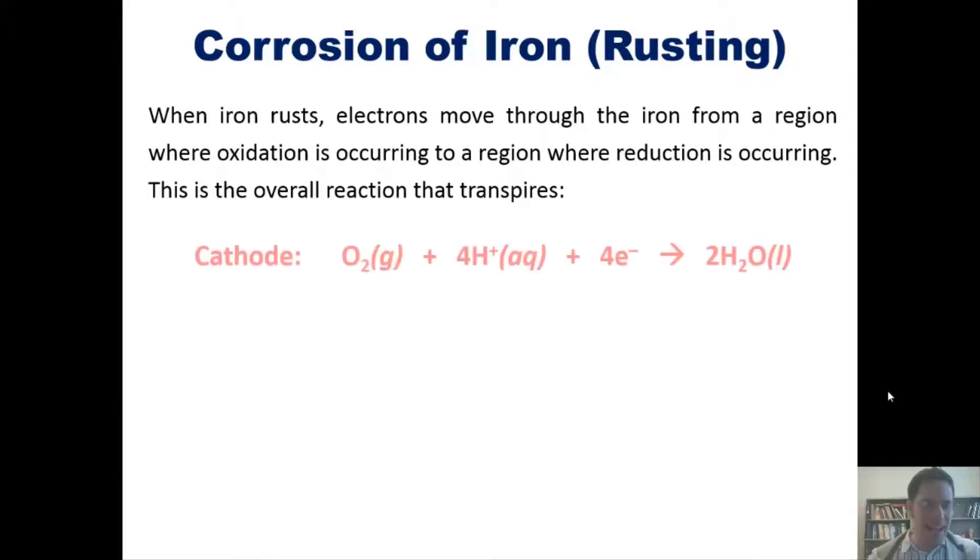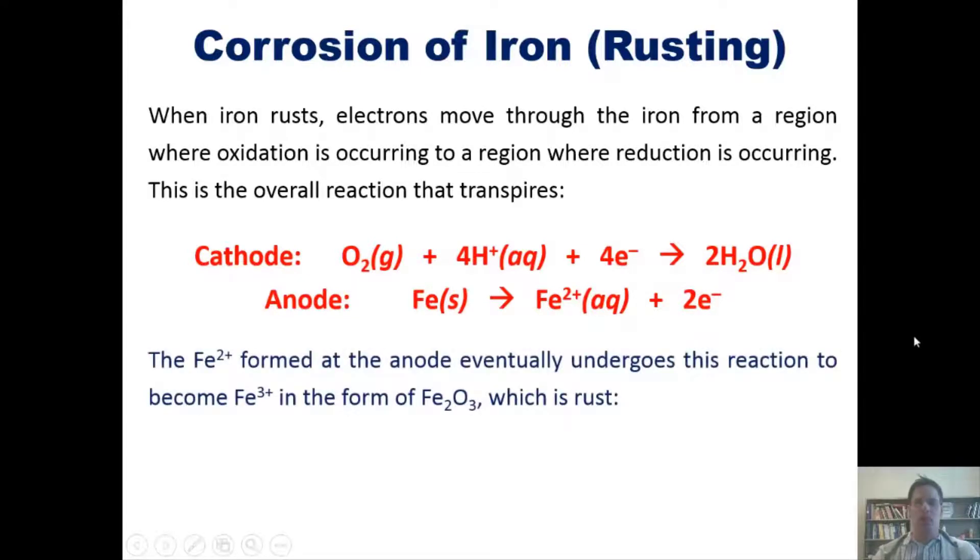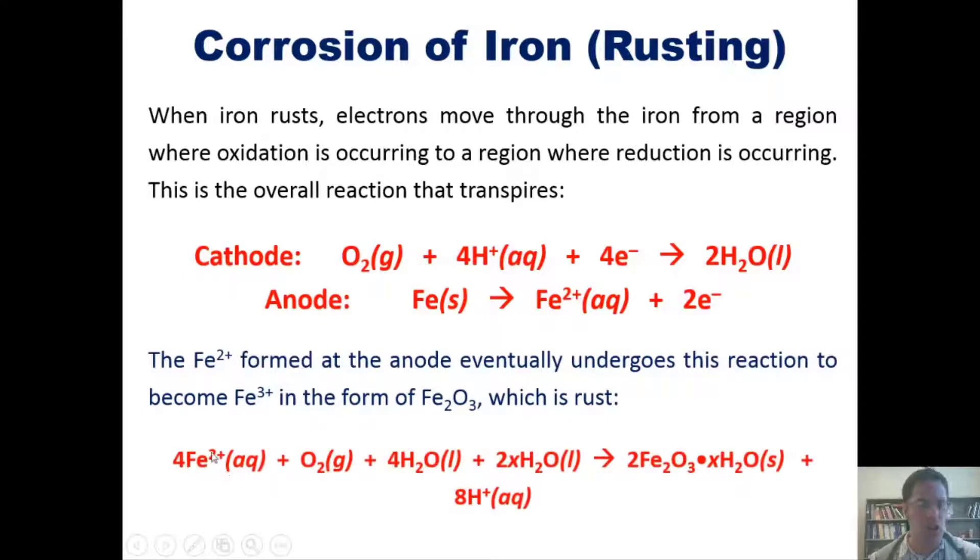This is the overall reaction that transpires. At the cathode we have oxygen which has an oxidation number of zero being reduced to oxygen 2- in water. At the anode we have iron which is iron zero losing electrons or being oxidized to form iron 2+. The iron 2+ formed at the anode eventually undergoes this reaction to become iron 3+ in the form of iron oxide right here, which is rust, as we see in this equation: a bunch of iron 2+, a bunch of O2, and a bunch of water combining in some magical way to eventually form iron(III) oxide right here complexed with water.